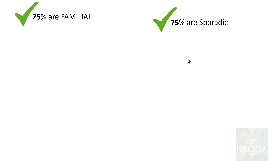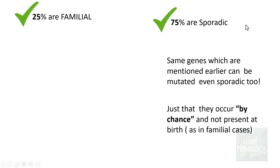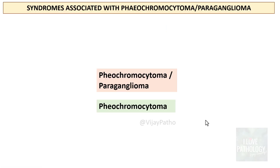25% of pheochromocytomas are familial, while 75% are sporadic. In sporadic cases the same genes can be mutated, but the difference is that mutations occur by chance and are not present at birth. When mutations are present at birth, the condition is called familial. Let's now look at the various syndromes associated with pheochromocytoma and/or paraganglioma.